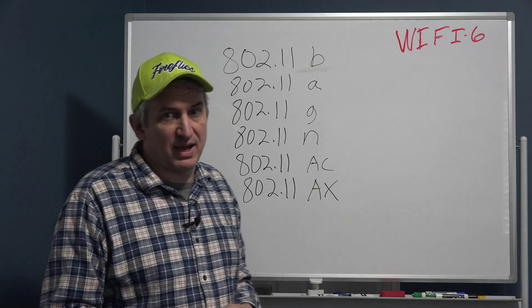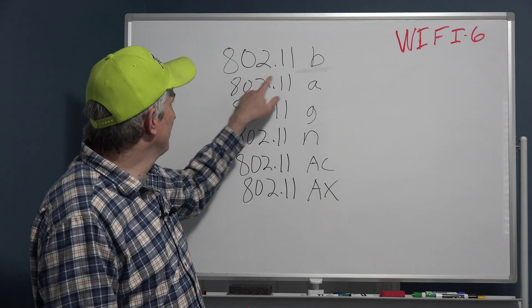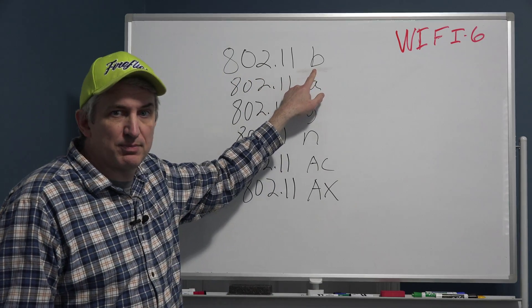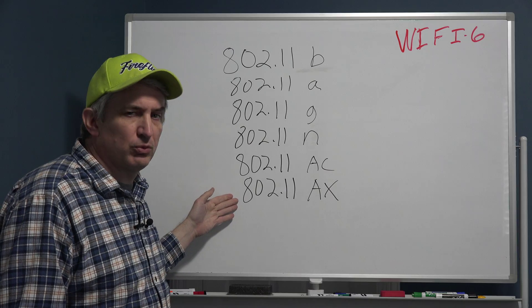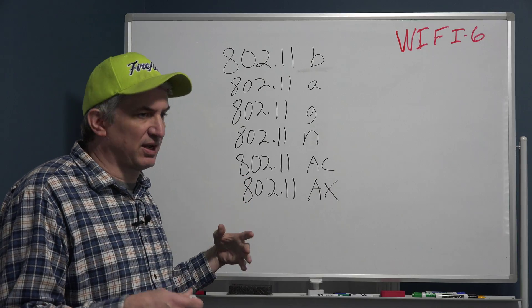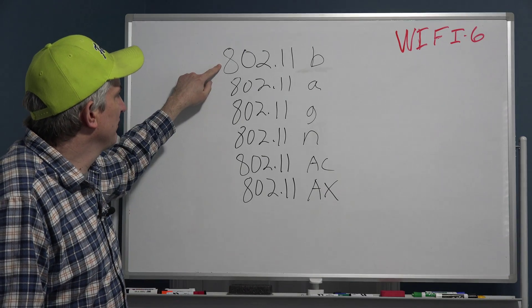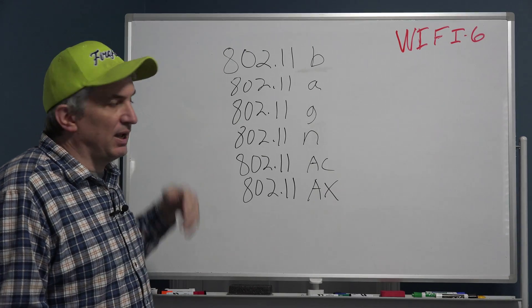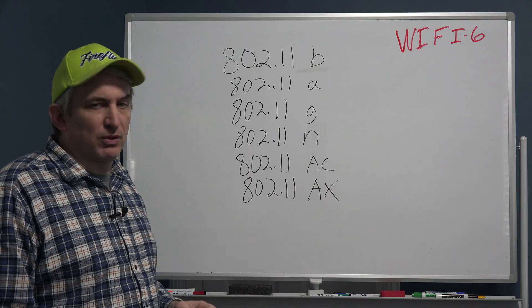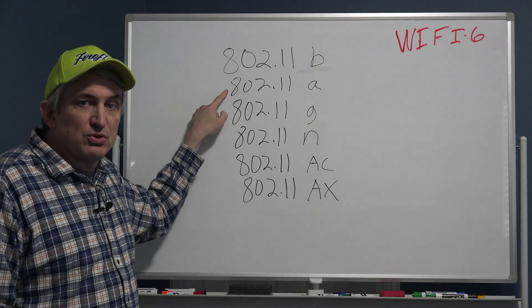The very first WiFi we had was 802.11b, and these by the way are consumer versions of WiFi. There are some other WiFi standards I'm not going to get into, but 802.11b came out and that's what everybody used for a pretty long time. Then came 802.11a.